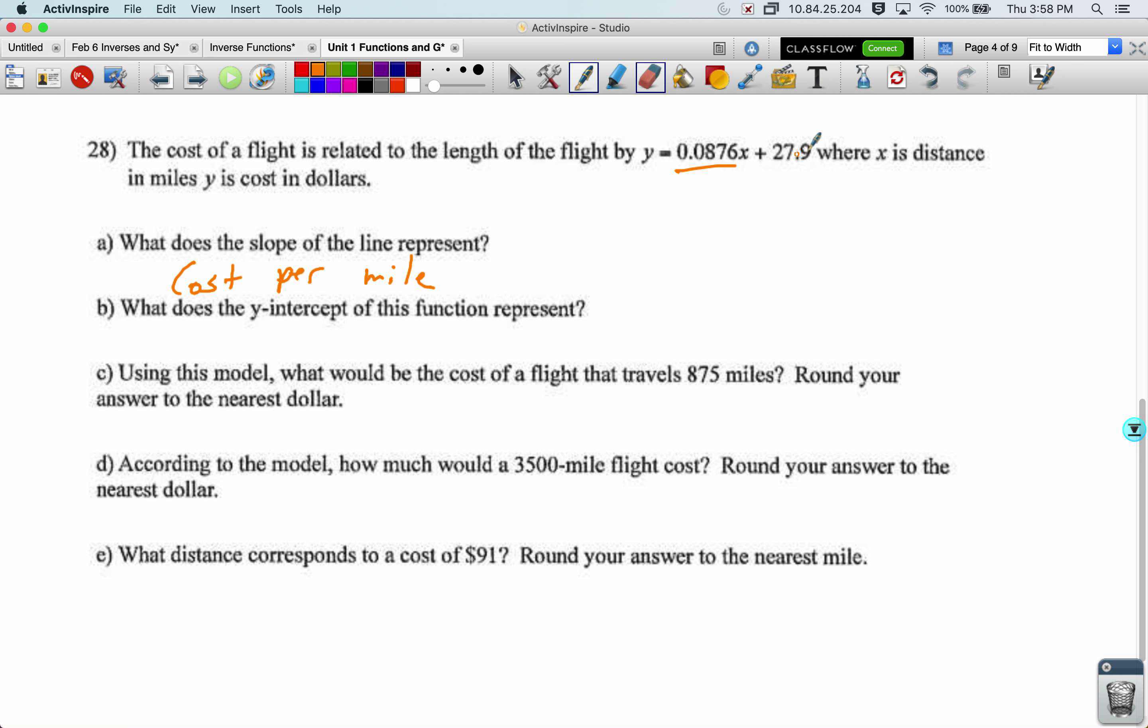The y-intercept of this function down here, well, let's think about this in terms of if I plugged in 0 for x, I went 0 miles, I would still have to pay $27.9. So we could think of that as something like overhead, the amount you have to pay, and then the price goes up from there related to how far it goes. So just the cost of just sitting down on the plane, and then you pay per mile.